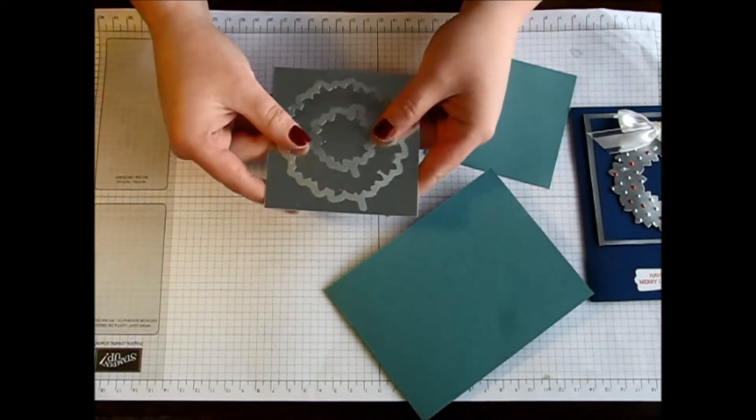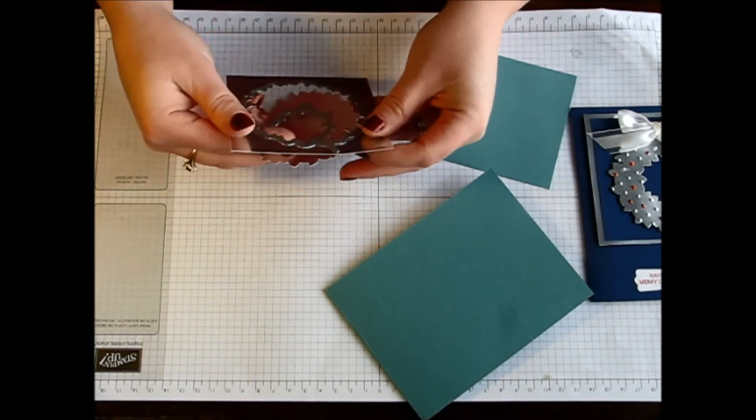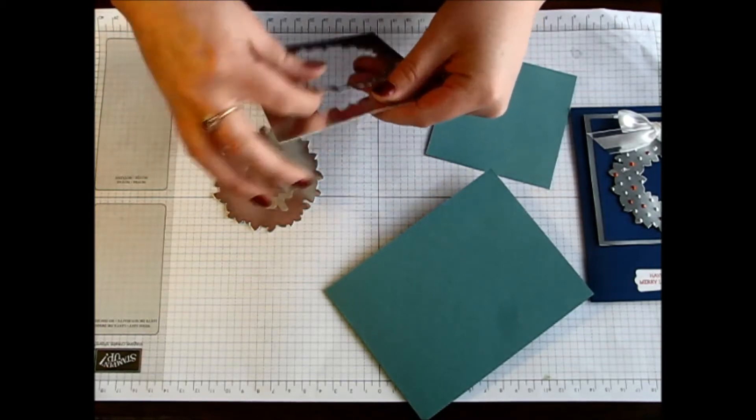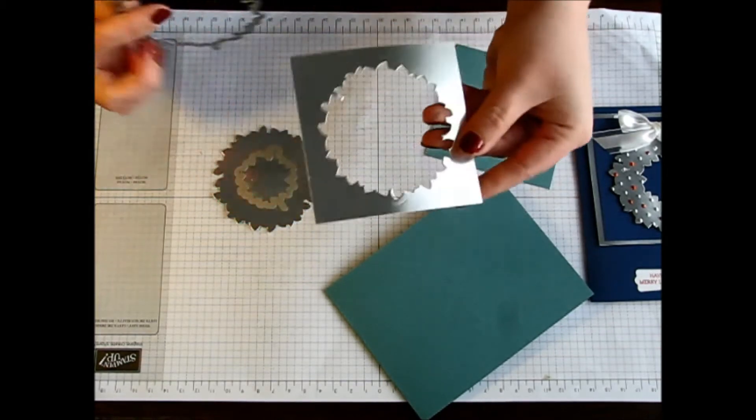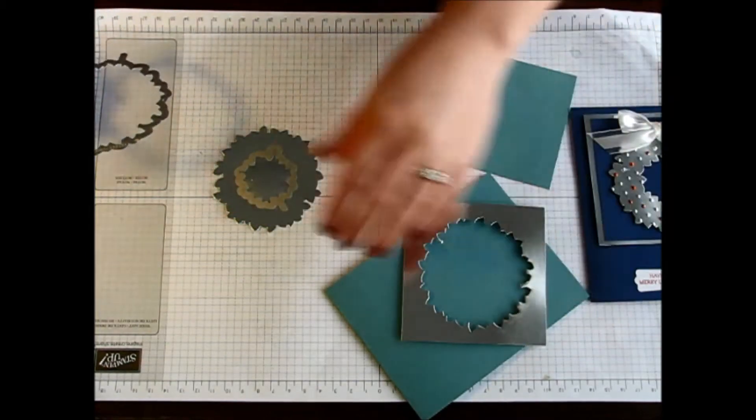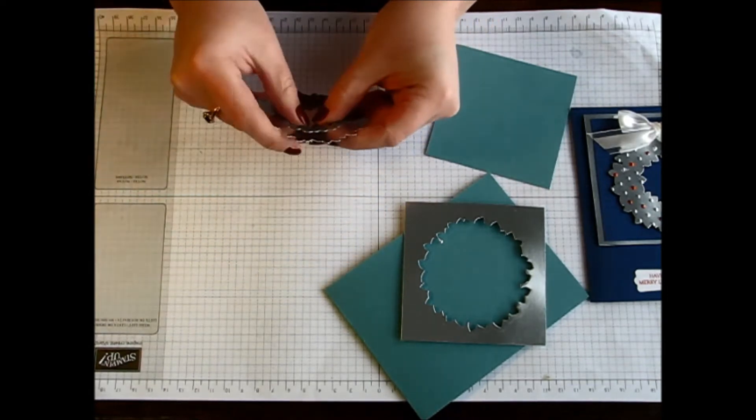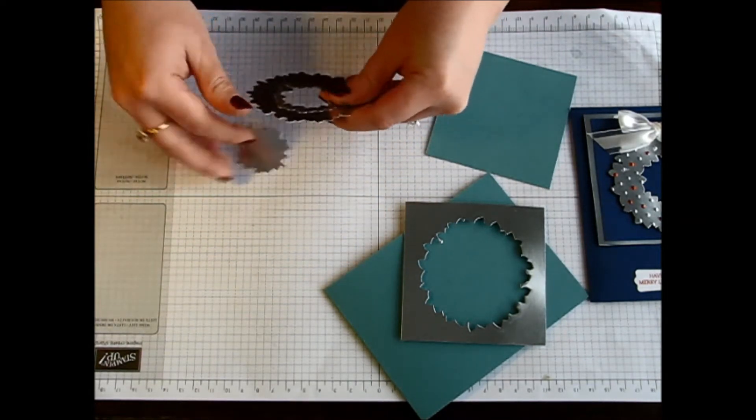Okay, so now I have my wreath all popped out. Here we go. And so we are going to use that as our layering piece. So we want to save that. And then we are just going to pop out our wreath.